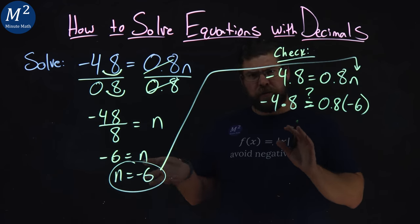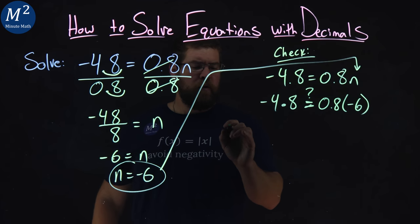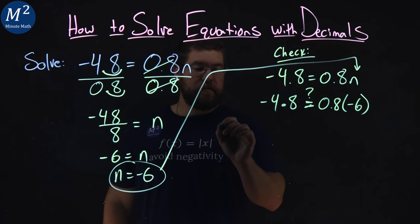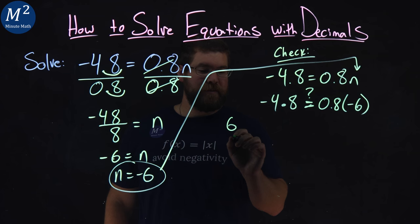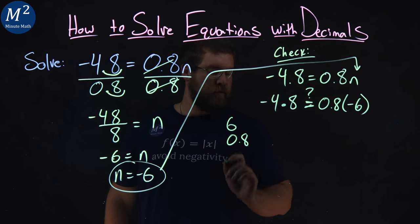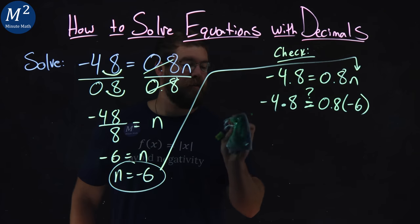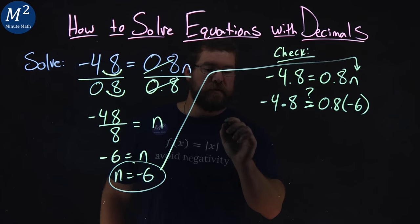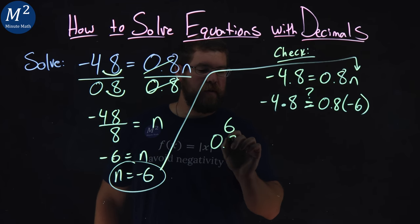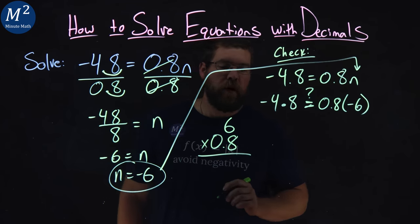Well, multiplying decimals is similar to multiplying fractions. We have a 6 here, and a 0.8. Let me write it like this, actually. 6 and 0.8. All right.